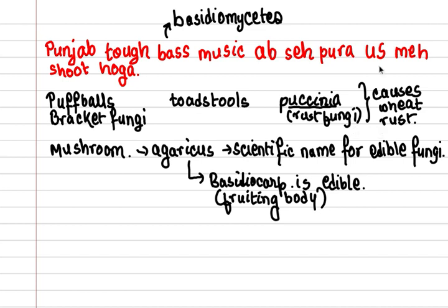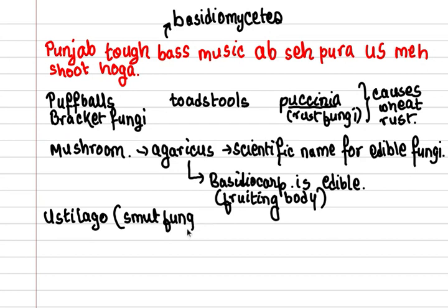Then US means Ustilago. SHOOT stands for smut fungus, which is a parasitic fungus. It is parasitic on grasses, and you can remember this because there is a G in Ustilago, so it is parasitic on grasses.